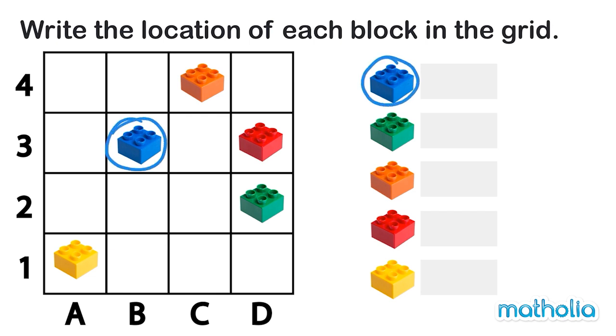The blue block is here. To find its position, we can look down to see that it is in column B, and we can look across to see that it is in row 3. So the blue block is in position B3.